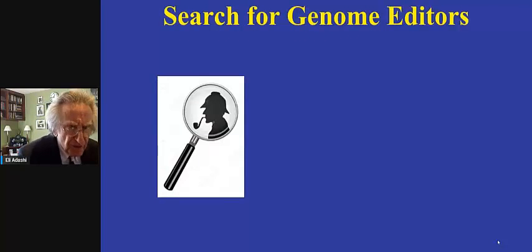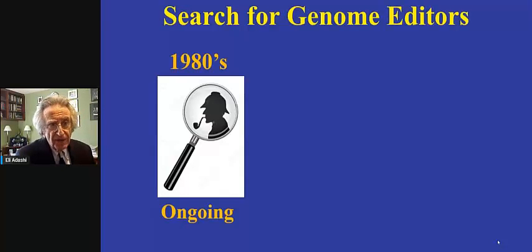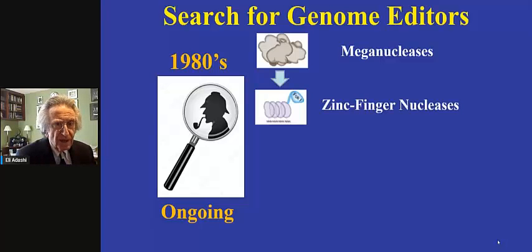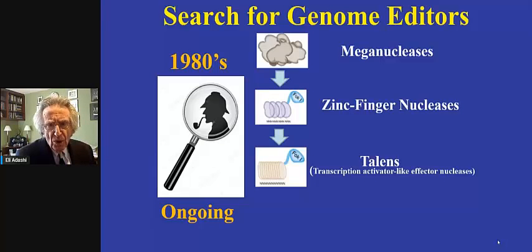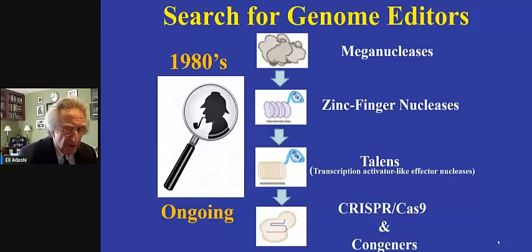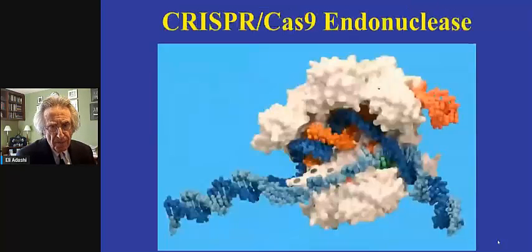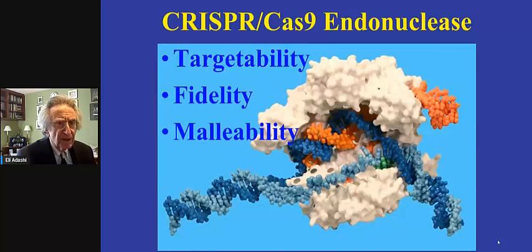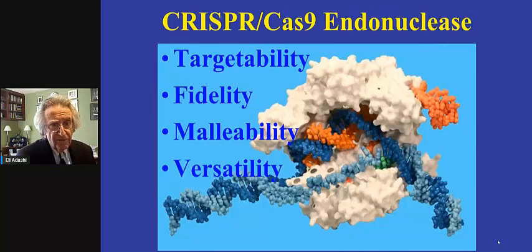By way of brief history, I should note that the search for genome editors has been underway for some time and is still ongoing. At some point we were dealing with so-called mega-nucleases, before too long with zinc finger nucleases, eventually with so-called TALENs or transcription activated-like effector nucleases, and then of course, beginning in 2012, we were introduced to CRISPR-Cas9 and its congeners. CRISPR-Cas9 as an endonuclease stands out in terms of its targetability, fidelity, malleability, and versatility.